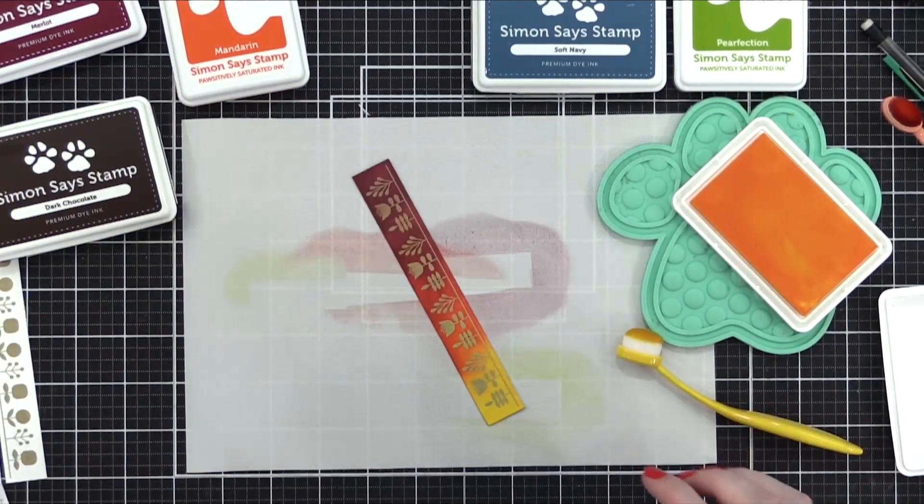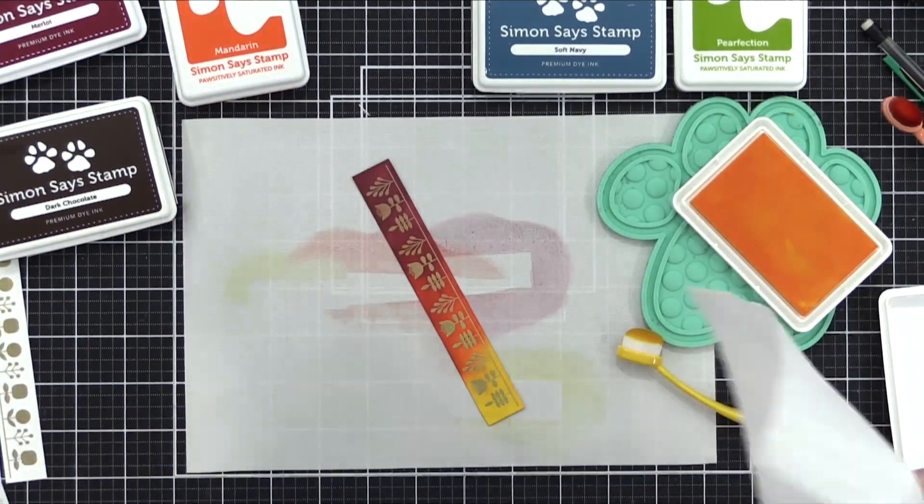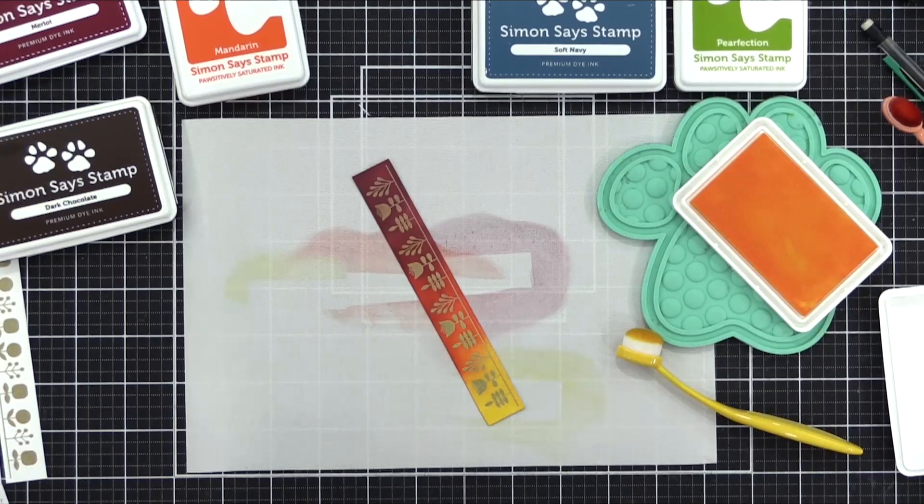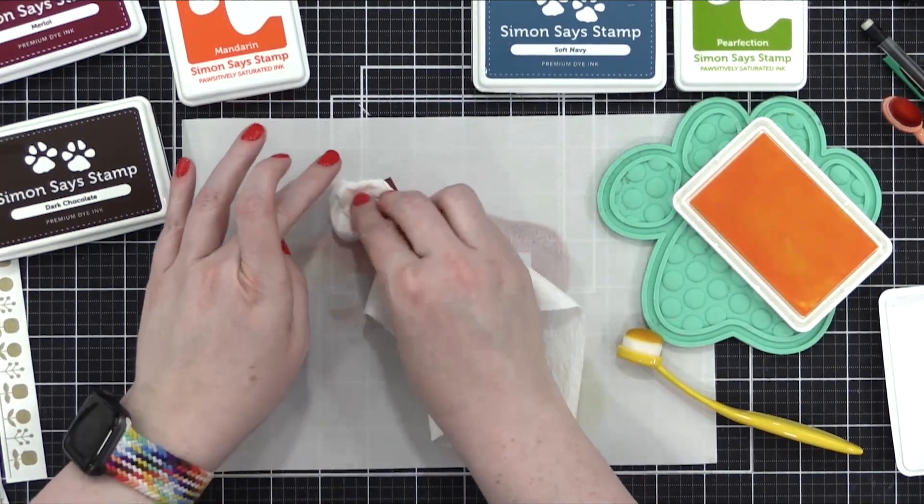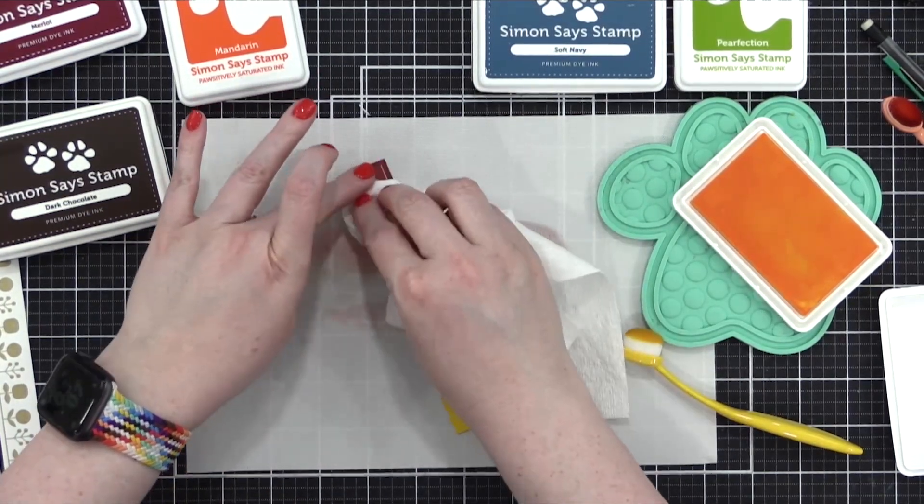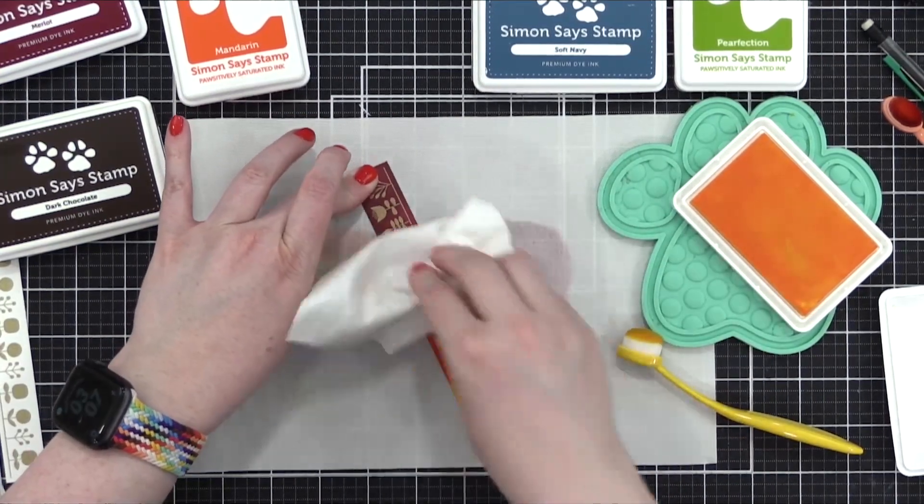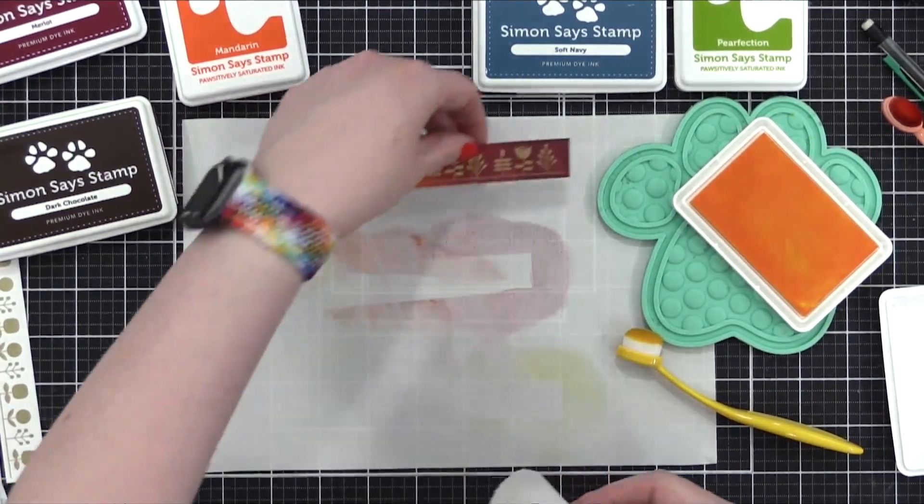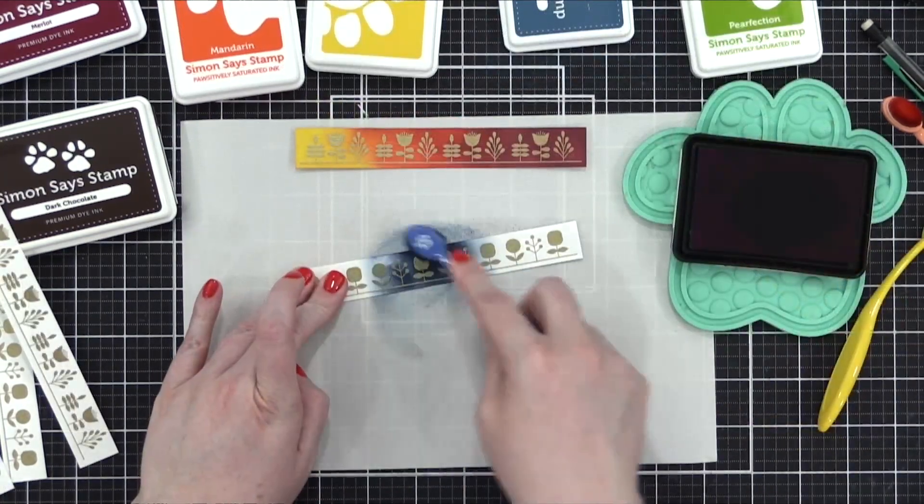After I had all the blending done, I grabbed a paper towel. You could also just use a clean cloth. I wiped off any of that ink that might have settled on top of the embossing powder. You don't get a ton of ink, but it is just enough to make it worth using that paper towel.